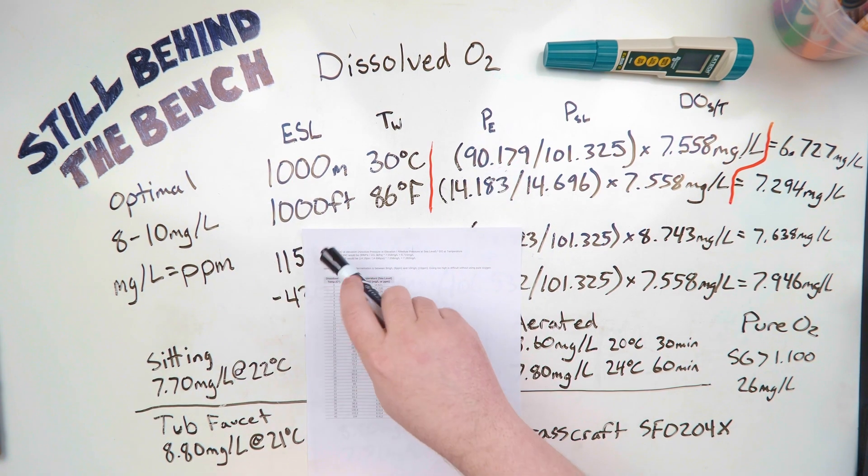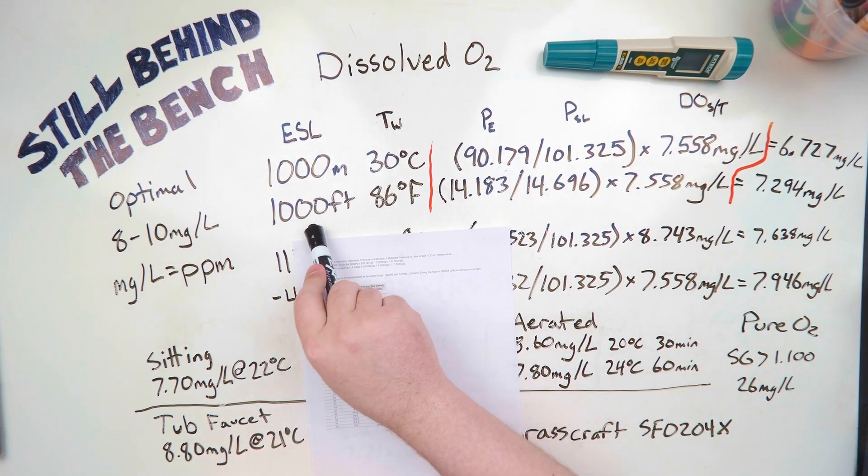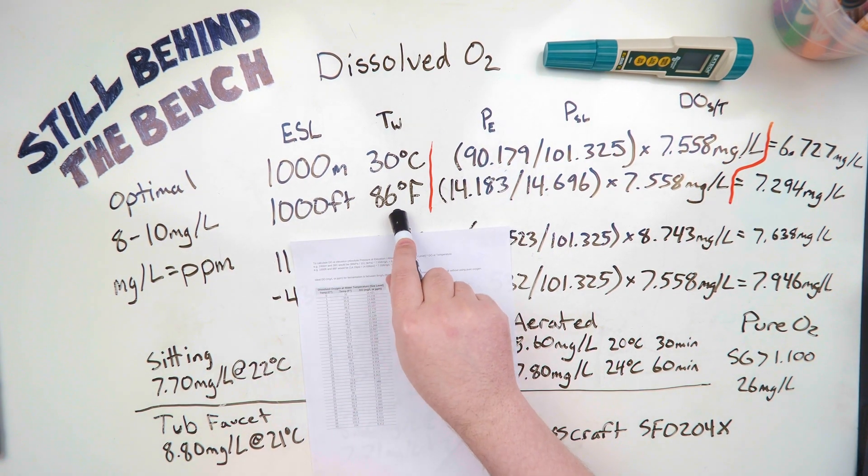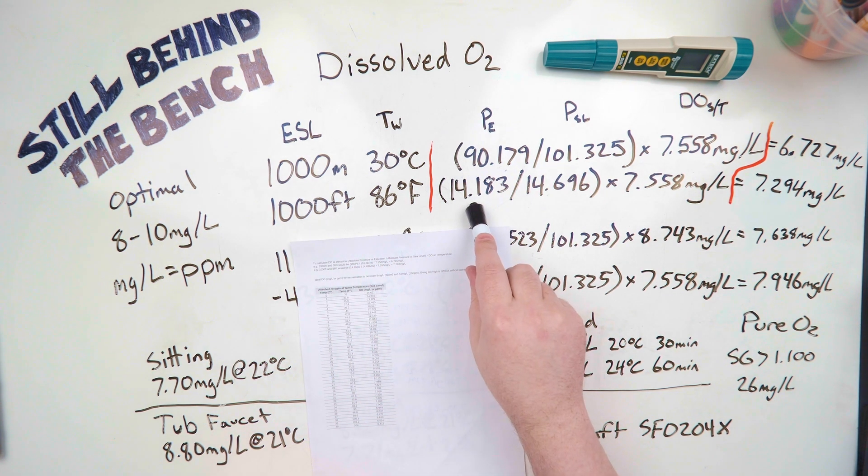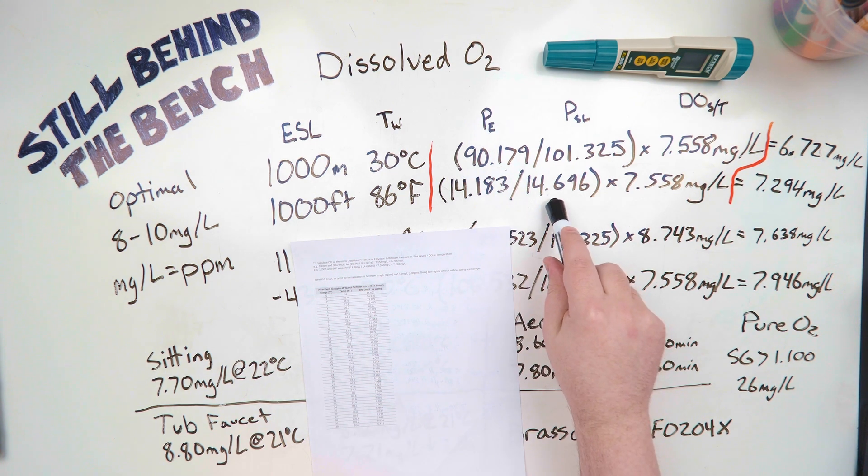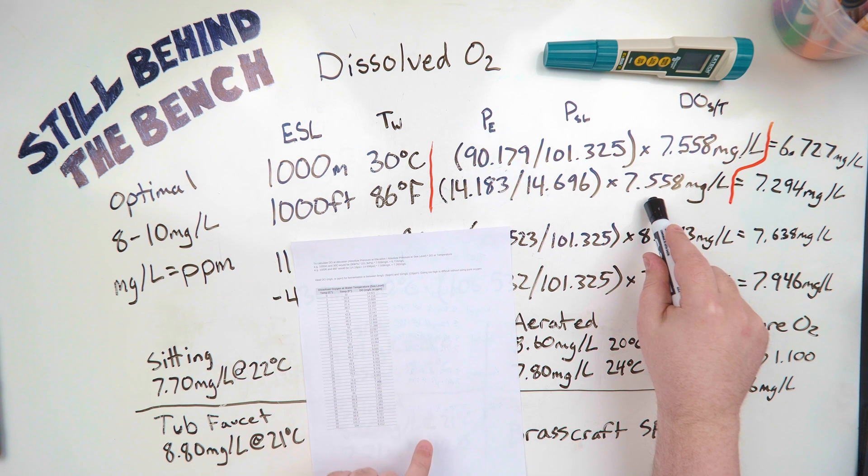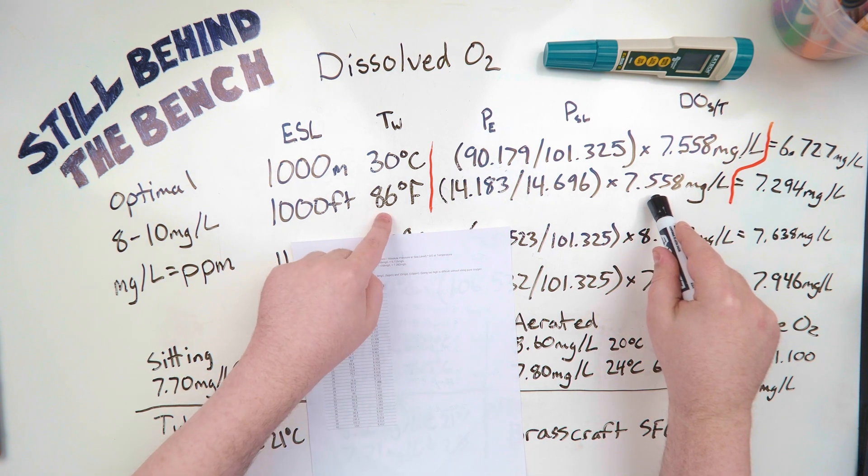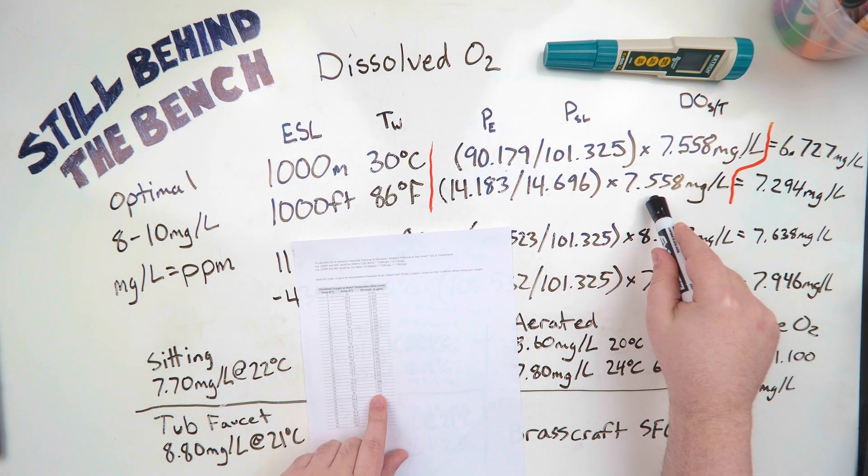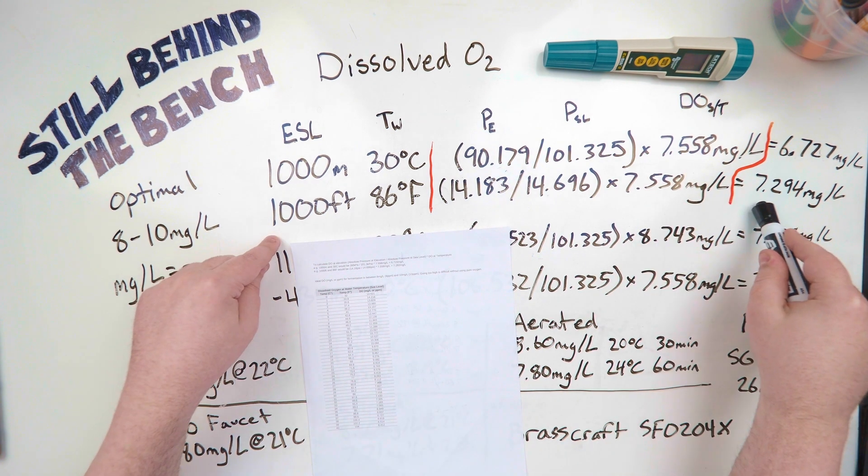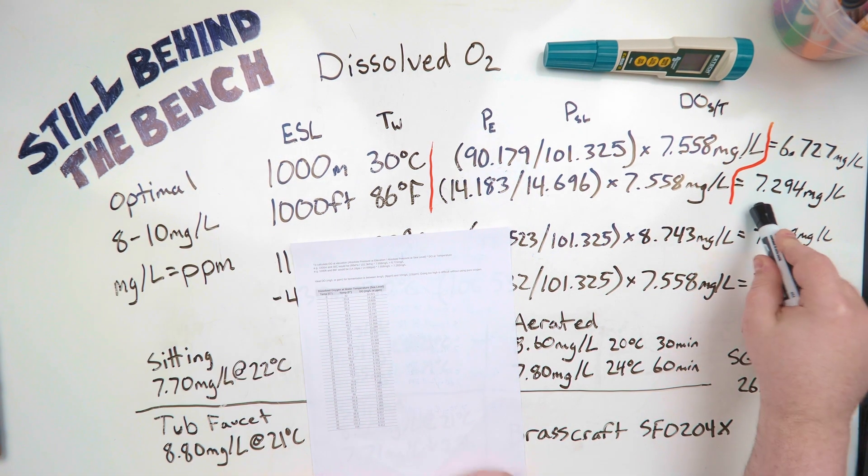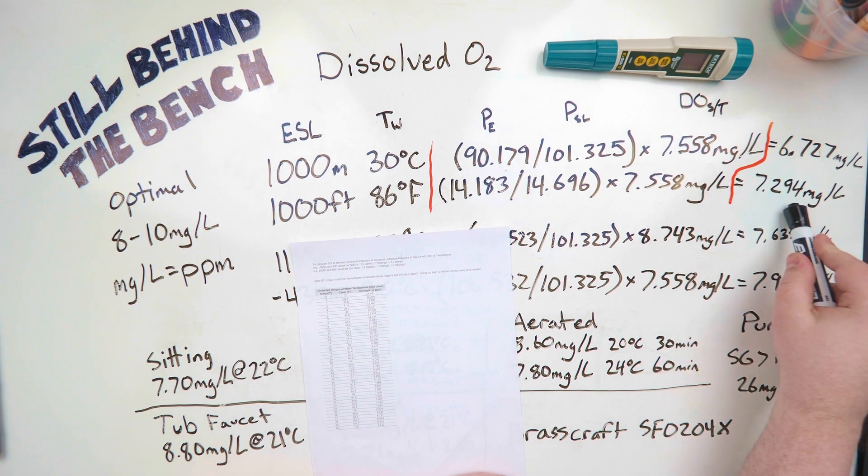We then look at the US units, we have a bucket at a thousand feet and at 86 degrees fahrenheit, the pressure at that elevation, a thousand feet, is 14.183 psi. Air pressure at sea level is 14.696 psi. The amount of dissolved oxygen at sea level and 86 degrees fahrenheit is also 7.558 milligrams per liter. So that means at a thousand feet, which is about 300 meters, you're going to have 7.294 milligrams per liter.